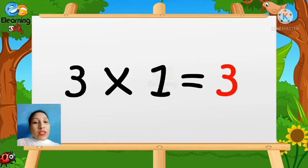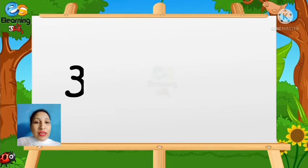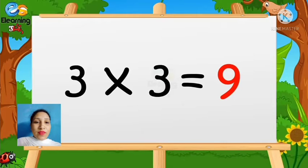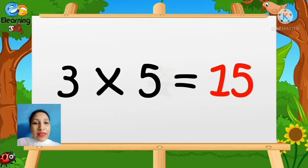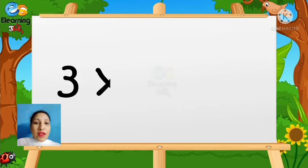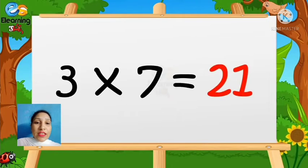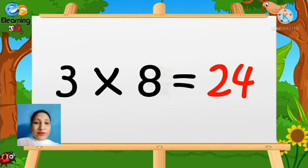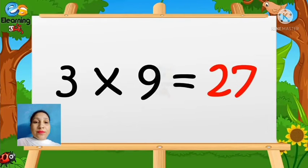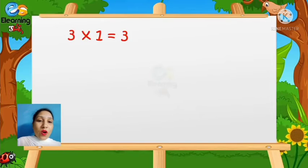Students, this was the table of two. Now we will revise the table of three. Three ones are three, three twos are six, three threes are nine, three fours are twelve, three fives are fifteen, three sixes are eighteen, three sevens are twenty-one, three eights are twenty-four, three nines are twenty-seven, and three tens are thirty.